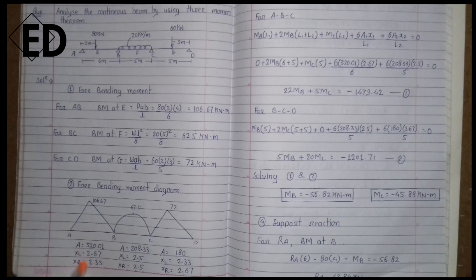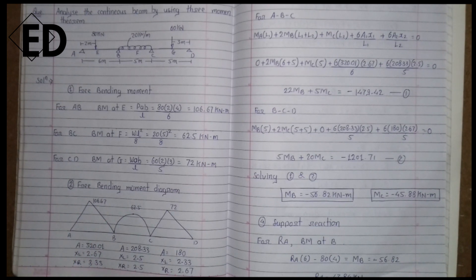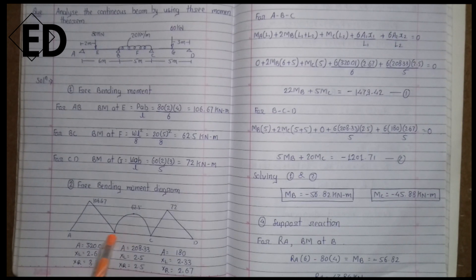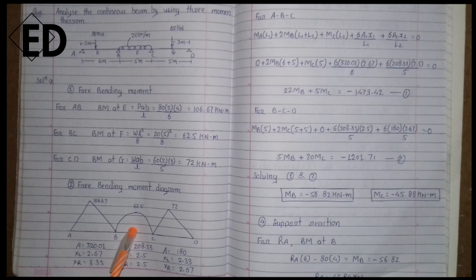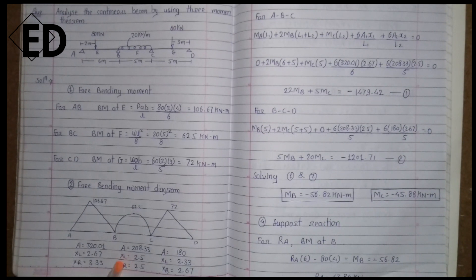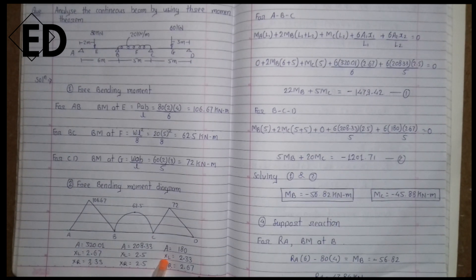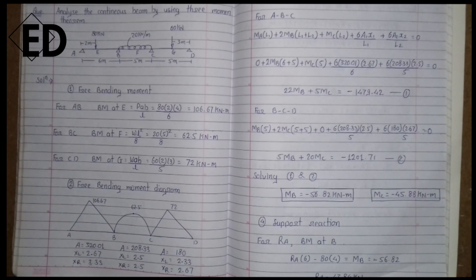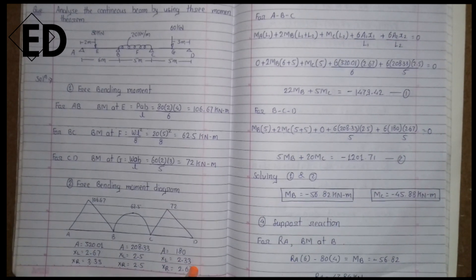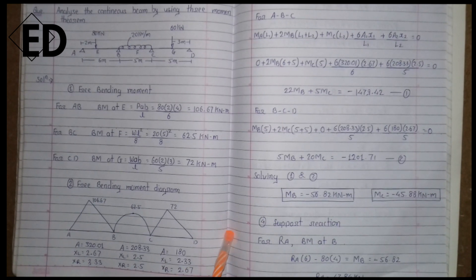Here, xl is the distance of the centroid from the left-hand side and xr is the distance from the right-hand side. xl is calculated using the formula (2a + b)/L. For the parabola (span BC), the centroid lies at the middle, so xl equals 2.5. For the triangle in span CD, using (2a + b)/L, the centroid from the left is 2.33 m and from the right is 2.67 m.